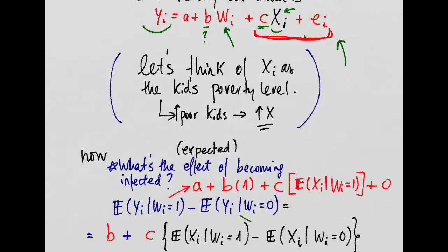And then the error is a white noise, so an expectation is just 0. Now, we do the same thing for the expectation of the outcome, given that the kid is not sick, and we get the same A plus, now, B is not multiplied by 1 anymore, because W takes the value of 0 when the kid is healthy, and B would be multiplied by 0, so it goes away. And then plus C times the expectation of the unobservables, the poverty levels, given that the kid is healthy.